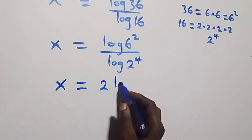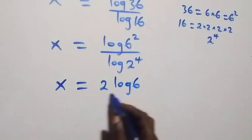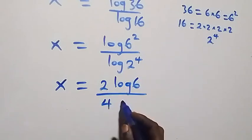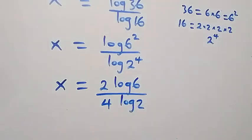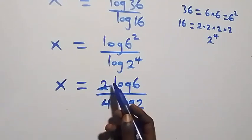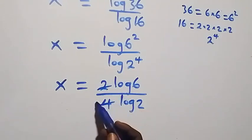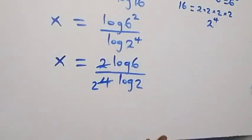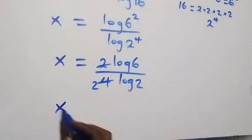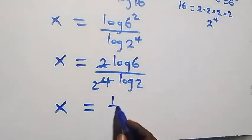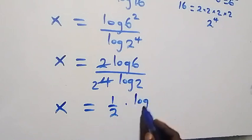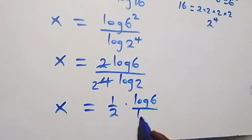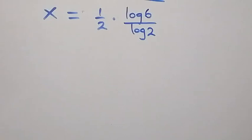Applying the power law, the power is 2 and we have x equals to 2 log 6 divided by 4 log 2. Then 2 can go into 4, giving 1 over 2, and this becomes x equals to 1 over 2 times log 6 over log 2.